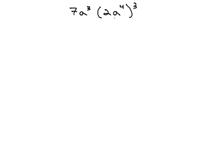Order of operations tells us to simplify what we can inside the parentheses first. We can't do any simplifying with 2a⁴, so we'll move on to the next step,